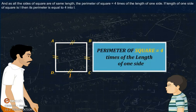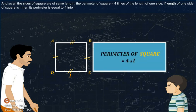And as all the sides of a square are of the same length, the perimeter of the square is equal to four times the length of one side. If the length of one side of a square is L, then its perimeter is equal to 4 into L.